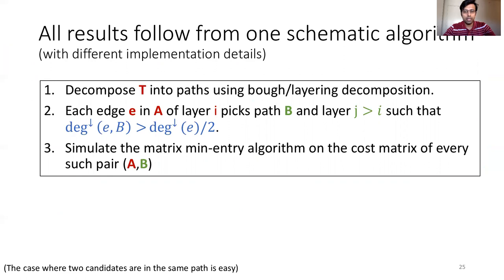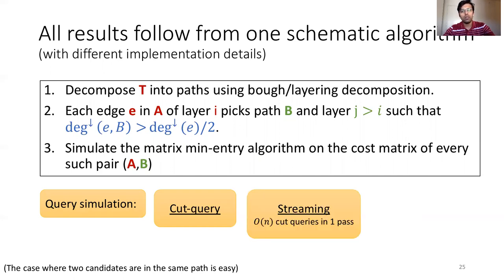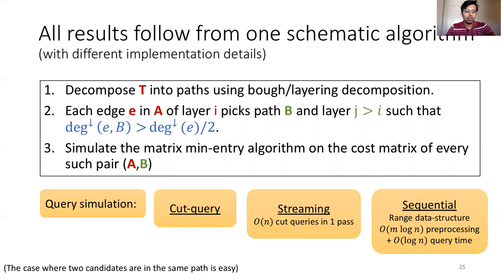Here is the algorithm at a glance. The second step gives you the condition for picking pairs of paths. This is a schematic algorithm as you can see. By the discussion we have so far, it is not very hard to see how to implement it in the cut query model. You will need order n log n many cut queries. For the streaming model, we use the fact that order n cut queries can be answered in one pass. The algorithm is parallel enough so that we can use the full power of the statement to get order log n many passes. For sequential implementation, we use a range setting data structure. This requires order m log n time preprocessing and order log n time for each cut query.